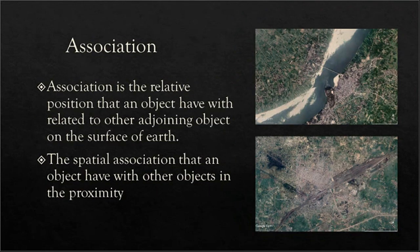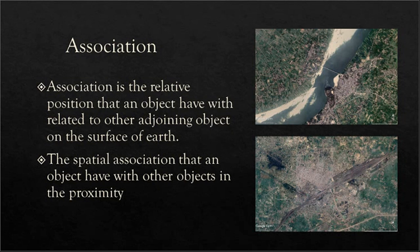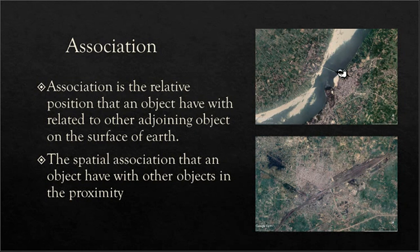Coming to the next element, it is association. Association is again one of the complex elements, but it makes our interpretation much easier. If we have the ability to find out the association of different objects on the surface of the earth, it will definitely help us in better interpreting the imagery. Association is the relative position that an object has with respect to other adjoining objects on the surface of the earth. From looking at this imagery we can understand that this is something like a river.